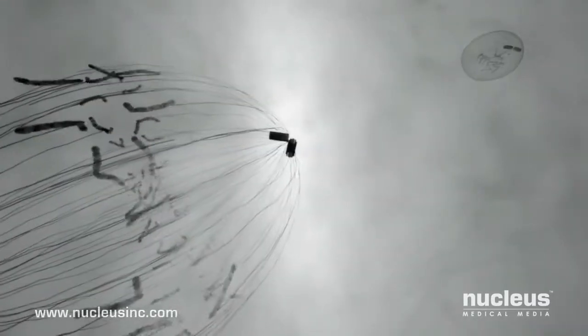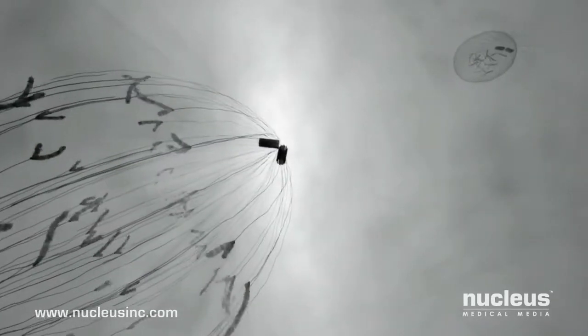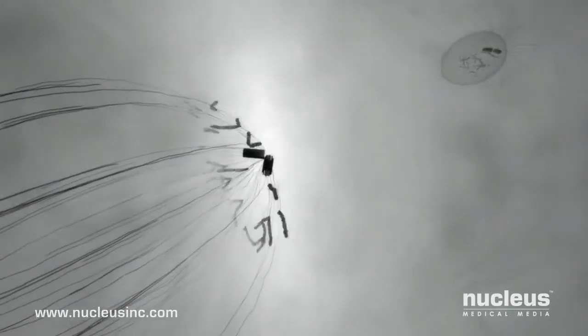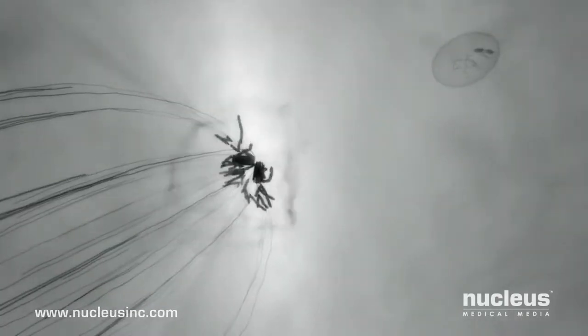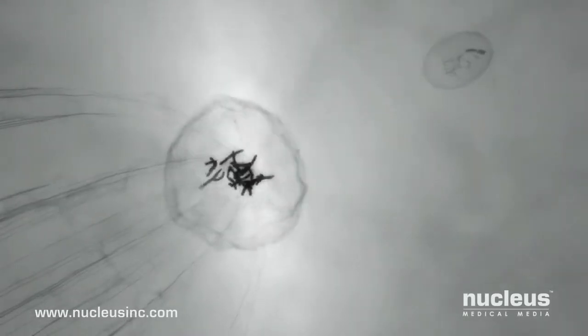The female genetic material, awakened by the fusion of the sperm with the egg, finishes dividing, resulting in the female pronucleus, which also contains 23 chromosomes.